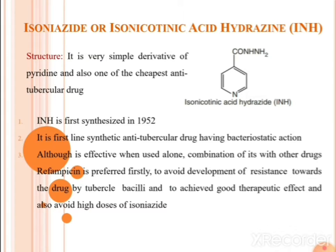The first drug is isoniazide, also called isonicotinic acid hydrazide, abbreviated as INH. The structure shown here has pyridine as the basic ring with C=O, NH, and NH2 — it is a simple derivative of pyridine and one of the cheapest anti-tubercular agents. Isoniazide was first synthesized in 1952 and is the first-line synthetic anti-tubercular drug having bacteriostatic action.